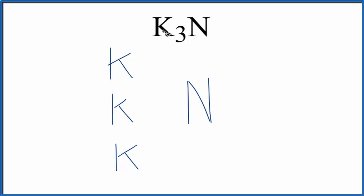Potassium is a metal, nitrogen's a non-metal. This is going to be an ionic compound, and electrons will be transferred from the metals here to the non-metal.